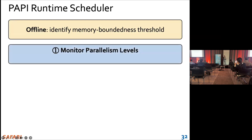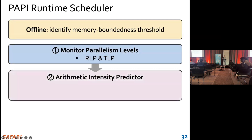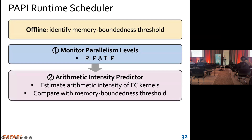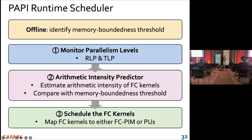After that, we execute runtime scheduling. First, we continuously monitor the parallelism levels, RLP and TLP. Once the parallelism levels change, we execute the arithmetic intensity predictor to estimate the arithmetic intensity of FC kernels and compare it with the memory-bound threshold. Finally, we execute the scheduling to map FC kernels to either FC PIM or processing units.